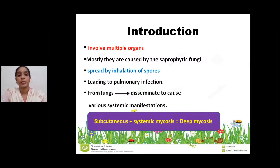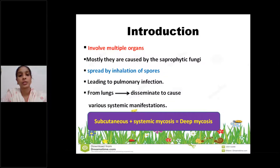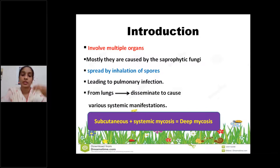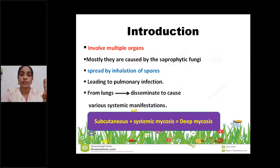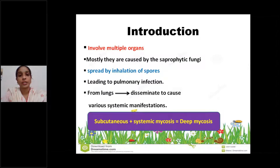Coming to the introduction: systemic mycosis involves multiple organs. These are mostly caused by saprophytic fungi. All the causal agents — the group of fungi responsible for systemic mycosis — are dimorphic fungi. Dimorphic means a single organism, a single fungus, can exist in two forms: yeast form in the host and in cultures at 37°C, and mycelial or hyphae form in soil and at 20–25°C.